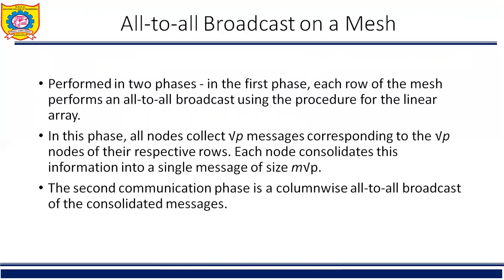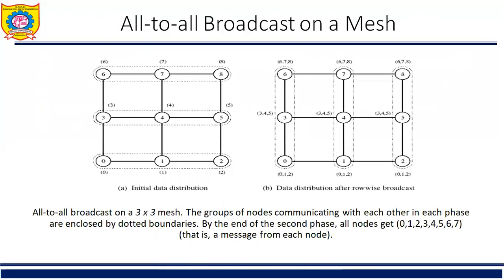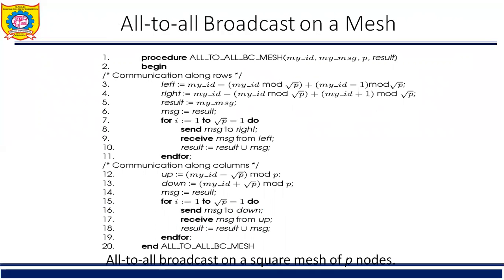By the end of the second phase, each node obtains all pieces of M-word data that originally resided on different nodes. The distribution of data among nodes of a three-by-three mesh at the beginning of the first and second phase is shown in the figure. The algorithm for all-to-all broadcast on a sqrt(P) by sqrt(P) mesh is also shown, along with the mesh procedure for all-to-all reduction.